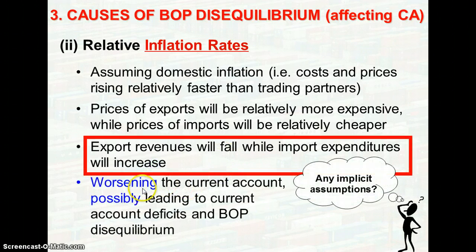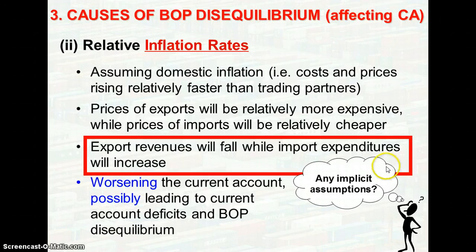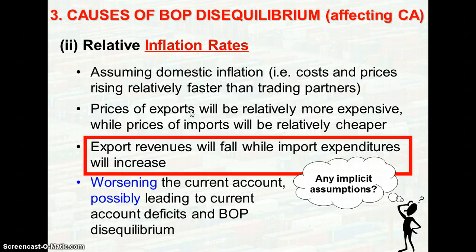Because of this, there is a worsening of the current account, possibly leading to a deficit and therefore balance of payment disequilibrium. However, in order for this analysis to be accurate, what are the implicit assumptions? For export revenue to fall when prices of exports become more expensive, we are assuming the demand for exports is relatively more price elastic. Therefore, when the price becomes more expensive, there will be a more than proportional decrease in the quantity demanded and hence export revenue will decrease.